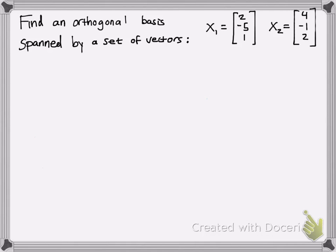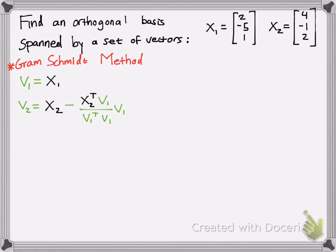So the first thing you want to do when you solve this problem is define v1 as x1 by using the Gram-Schmidt method. Next, we're going to want to solve for v2, which to make the mathematics easier, we're just going to write it in this form in the transpose because it's easy to calculate. So we write x2 first.